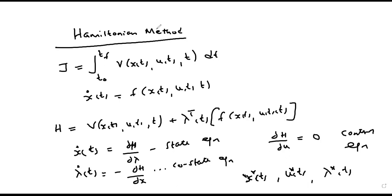In a nutshell, the Hamiltonian method involves formulation of the Hamiltonian function from the performance index and the state equation multiplied by the transpose of lambda. From this we formulate: x-dot(t) as the partial derivative of H with respect to lambda; lambda-dot as the negative partial derivative of H with respect to x; and the partial derivative of H with respect to u equals zero. Solving these simultaneous equations gives the optimal states and input.